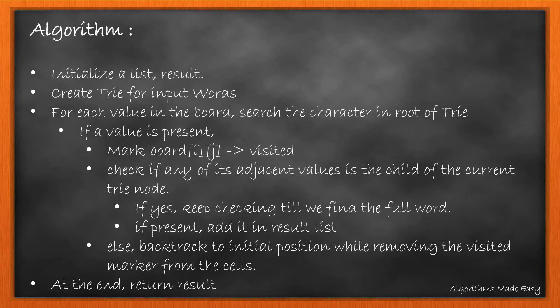Here is the algorithm. We will first initialize the list result. We will then create a Trie for the input words. For each value in the board, we will search the character in the root of Trie. If the character is present, we mark the board cell visited and check if any of its adjacent values are children of the current Trie node.